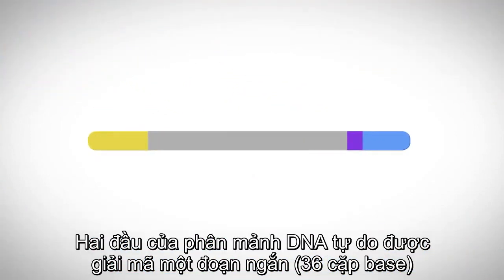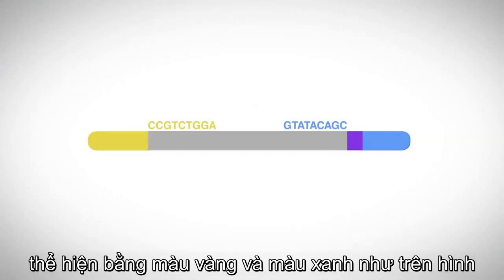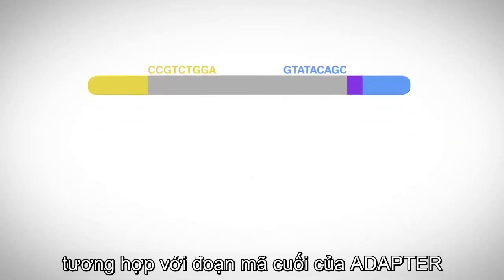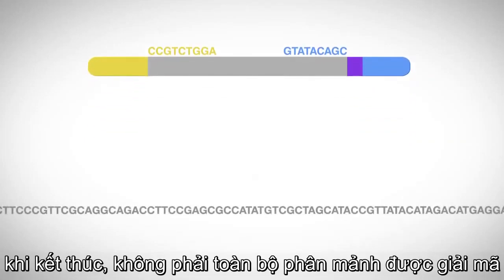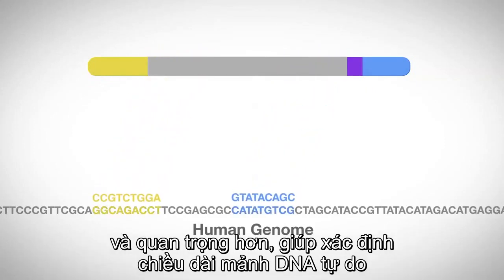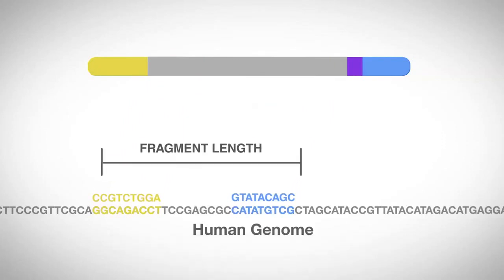Both ends of the cell-free DNA fragments are sequenced using short, 36 base-pair reads, shown here in yellow and blue, corresponding to the adapter ends. While the ends, not the entire fragment, are sequenced, paired-end reads enable improved alignment accuracy and, more importantly, determine the cell-free DNA fragment length.